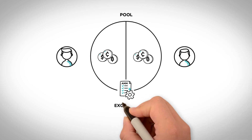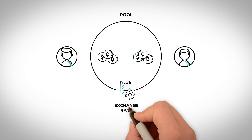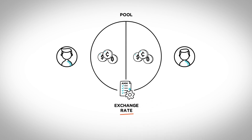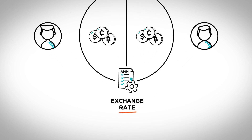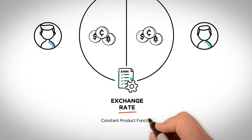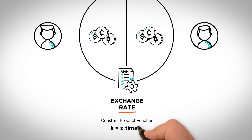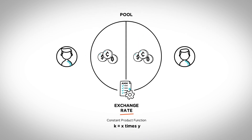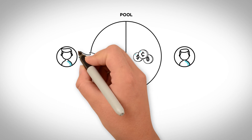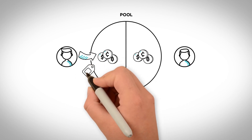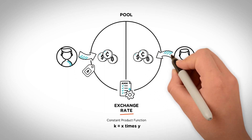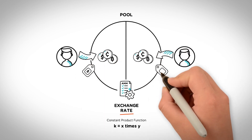The exchange rate they experience for trading is determined by a mathematical formula known as the constant product function, K equals X times Y. In simple terms, this means that price is determined by the relationship between the supply of each asset in the pool.